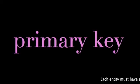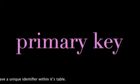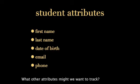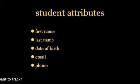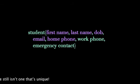Remember, each entity must have a unique identifier within its table, a primary key. Neither of these attributes are good candidates for a primary key. So let's consider what other attributes might we want to track for the student entity. We've expanded our attributes, but I still don't see a primary key candidate.